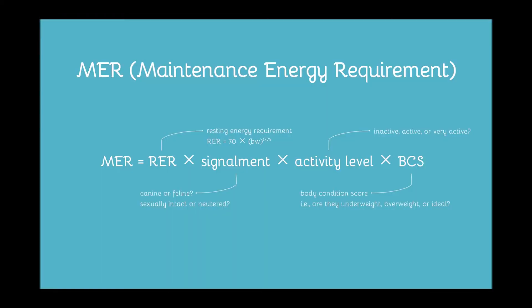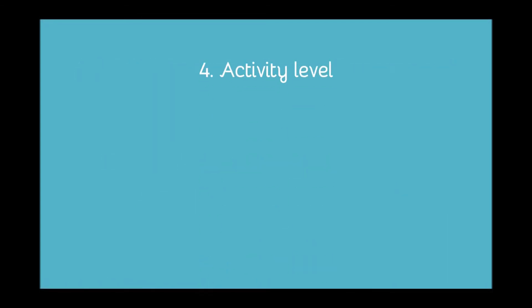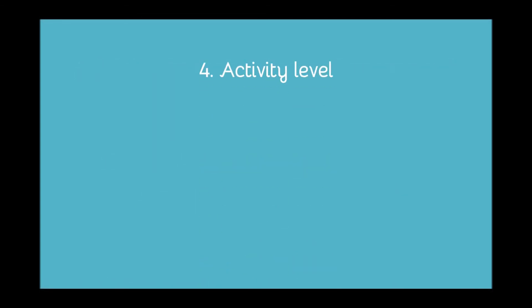The next step is looking at activity level. Exercise is going to play a huge role in how many calories your pets need to consume. Pets who are fairly inactive require much less energy than pets who are constantly exercising. Write down the factor that best matches your pet's activity level.